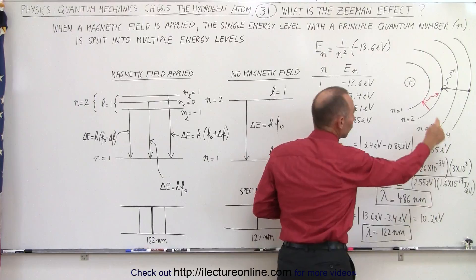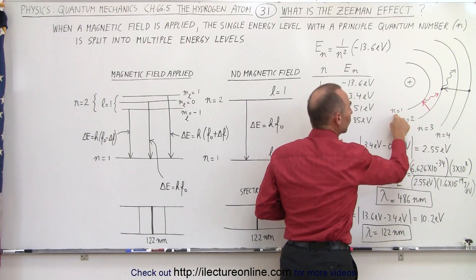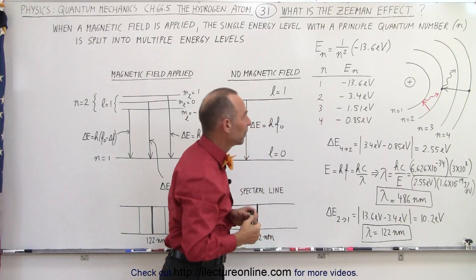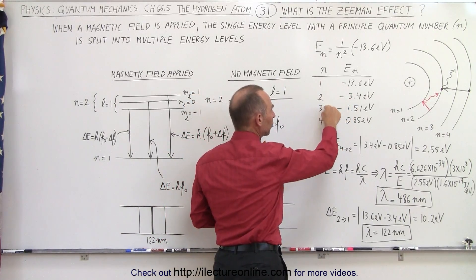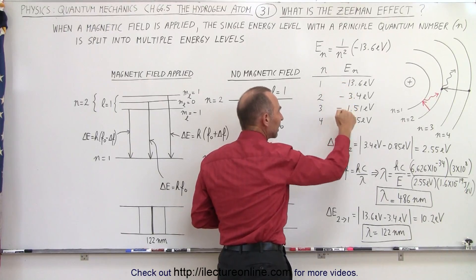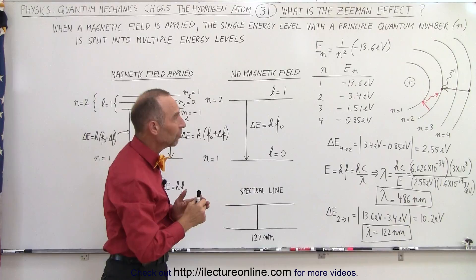Minus 13.6 electron volts is the energy level of the innermost orbit, where the principal quantum number n equals 1. At higher energy levels, n equals 2, n equals 3, n equals 4, we can calculate the associated energy levels of those particular regions.